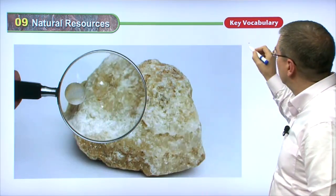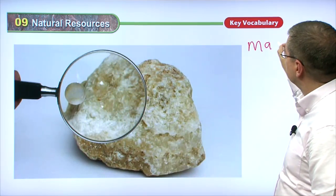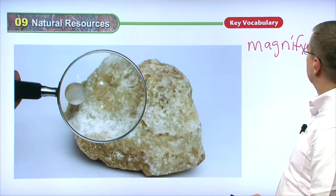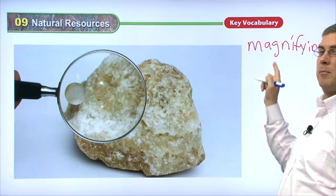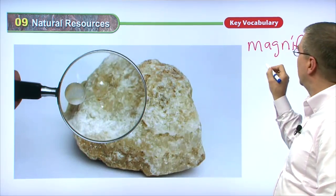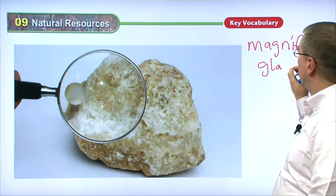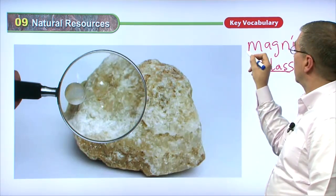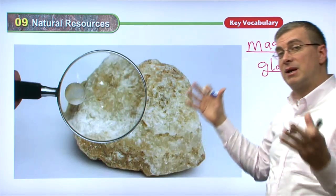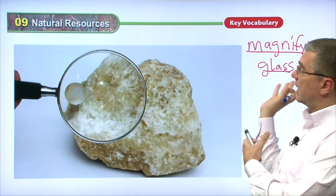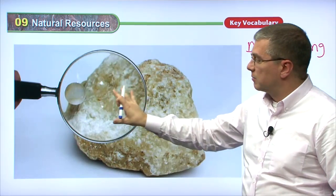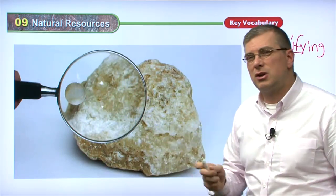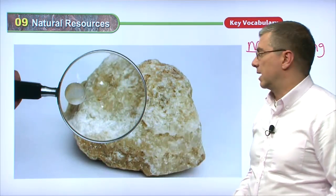By the way, this is a magnifying glass. We put 'glass' here — because what does it do? It's a piece of glass which magnifies. It magnifies — it makes things larger. So we call that a magnifying glass. We can see small things with the magnifying glass, and we can take a really good look at minerals with a magnifying glass.